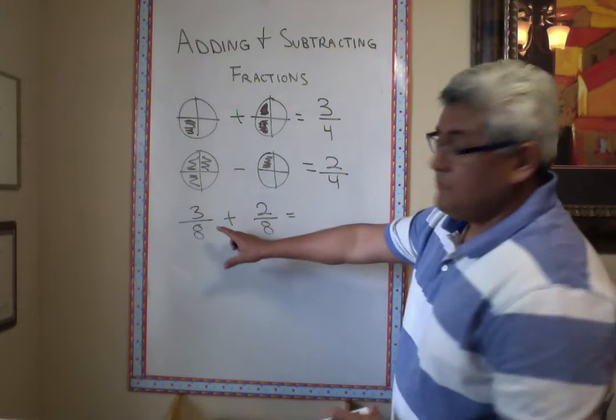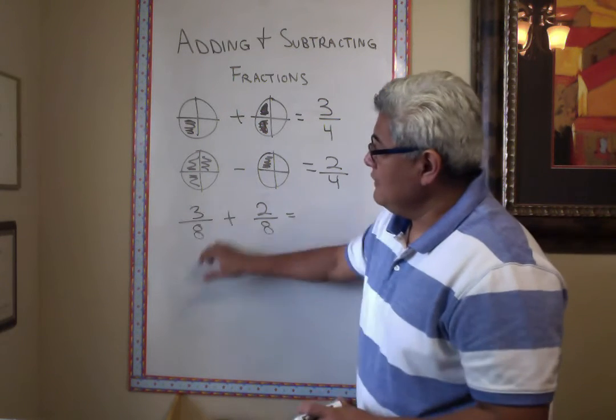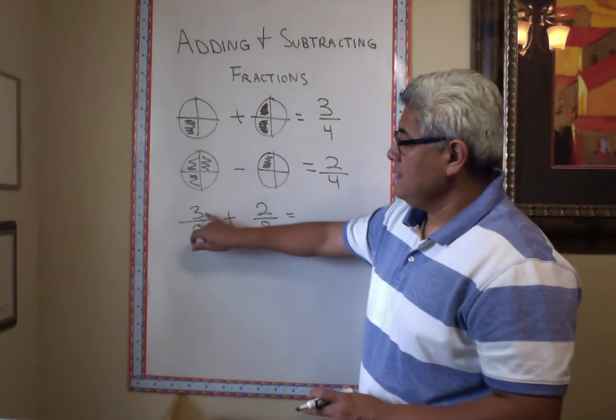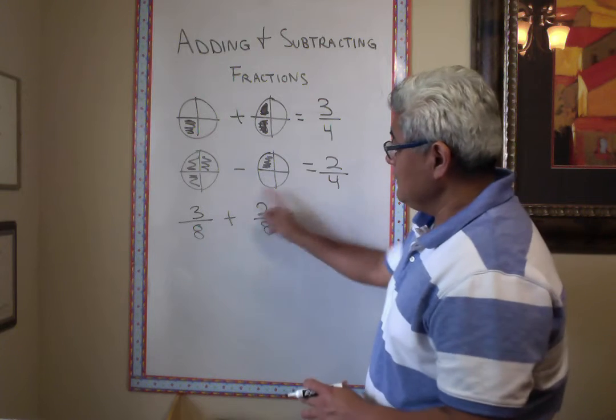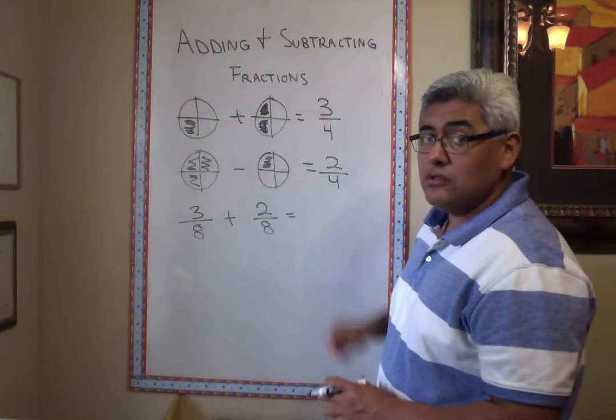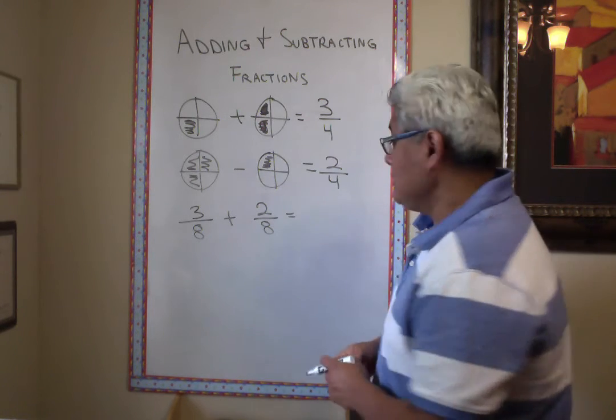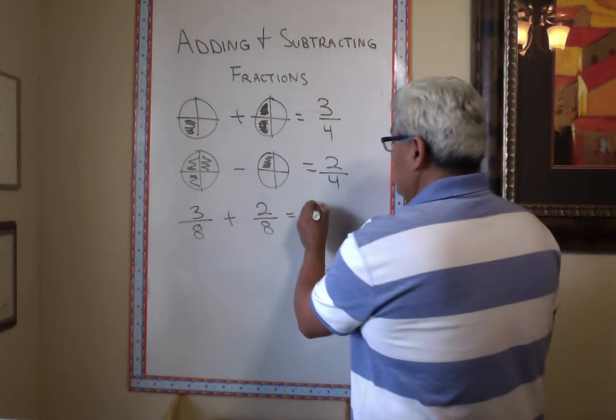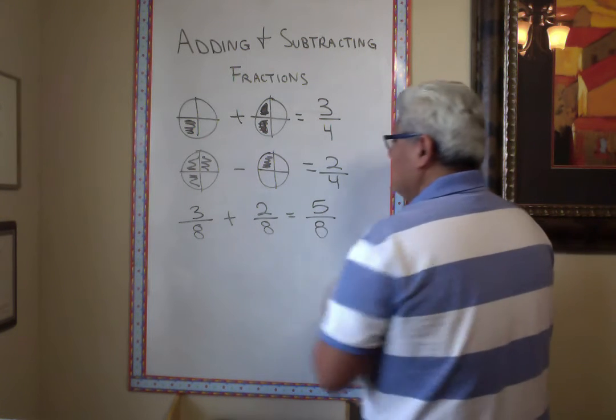So, let's picture this. This whole got cut into eighths. You use three. This whole got cut into eighths. You use two. Now, you put them all together. How much do you have? Five-eighths.